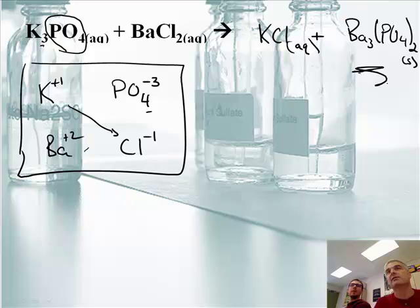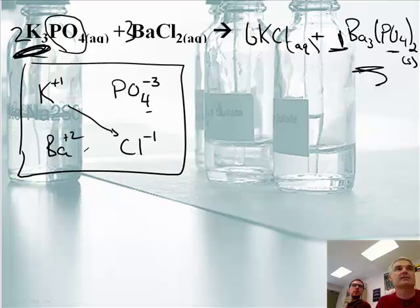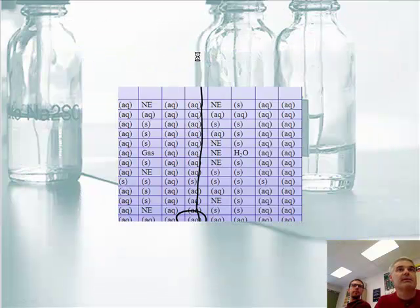So that reacts. Let's balance it. We just need to balance it. We've got a complex guy here, so we'll call him a one. So let's do the barium. I'll need a 3 here. And I got 2 phosphates, so I'll put a 2 here. That gives me 6 potassium. So that's 6. That gives me 6 chlorides. And hey, look at that. 6 chlorides. That's the answer.